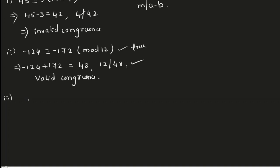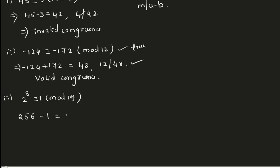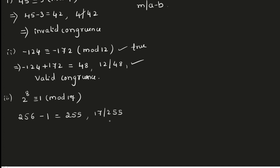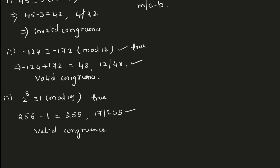Suppose if you are given: 2 raised to 8 is congruent to 1 mod 17. So 2 raised to 8 is 256. 256 minus 1 is 255. Now check whether 17 divides 255 — yes, of course 17 divides 255. So it is true — it is a valid congruence. Whenever you are given a check for whether the given congruences are valid or invalid, this is the procedure to follow.